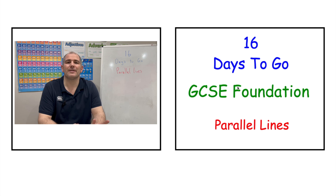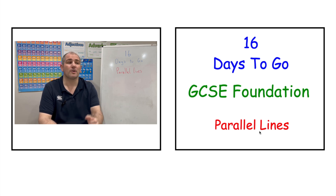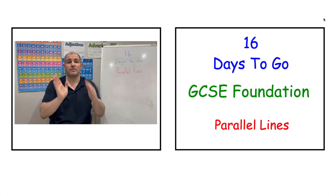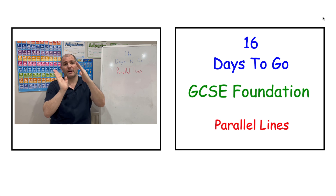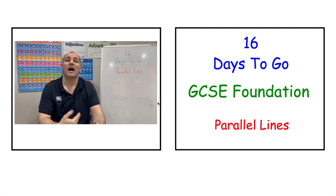If you're preparing for GCSE Foundation Maths, with 16 days to go, today we're going to be looking at parallel lines — straight lines that have the same gradient as each other — and looking at their equations and the fact that their gradients are the same. To access this revision session, click the link in the top right hand corner, the link in the description below, or wait for the two icons at the end of the video.